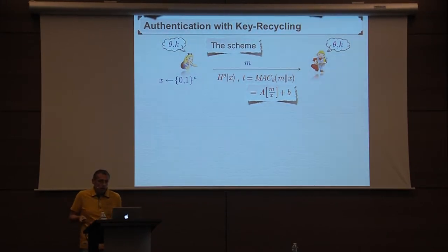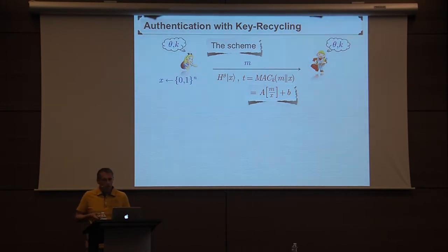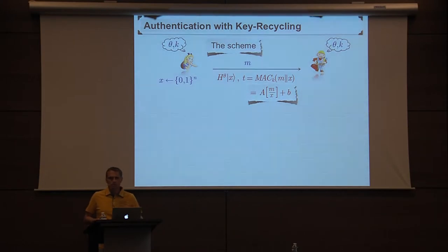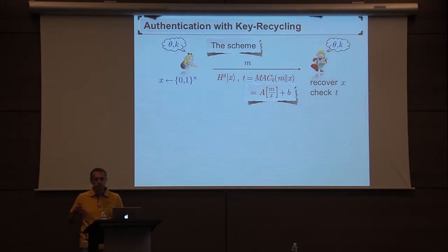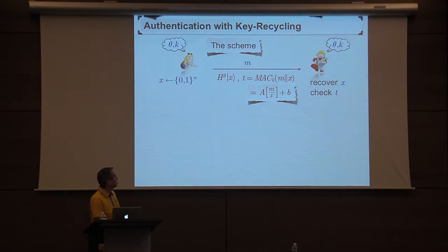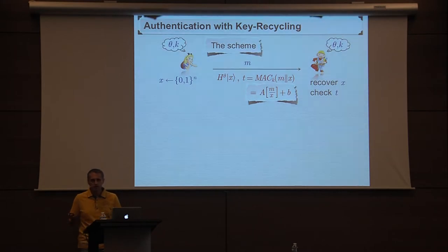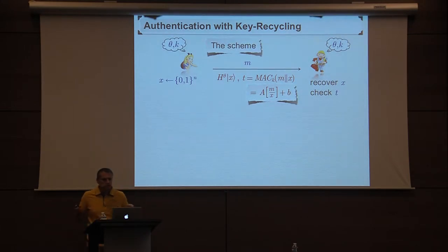Bob does pretty much the obvious thing. He also knows theta — the basis used to encode x into qubits — so by performing the correct measurement, he's able to recover x. Once he has x and the message, he can check the correctness of the tag. He accepts if the check works out, and he rejects if it doesn't. That's the scheme — extremely simple.